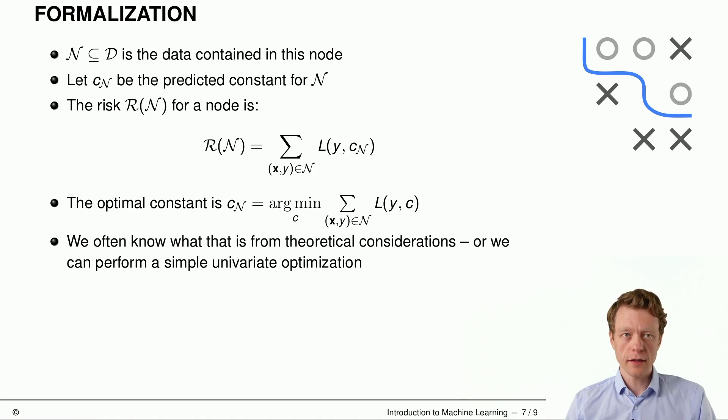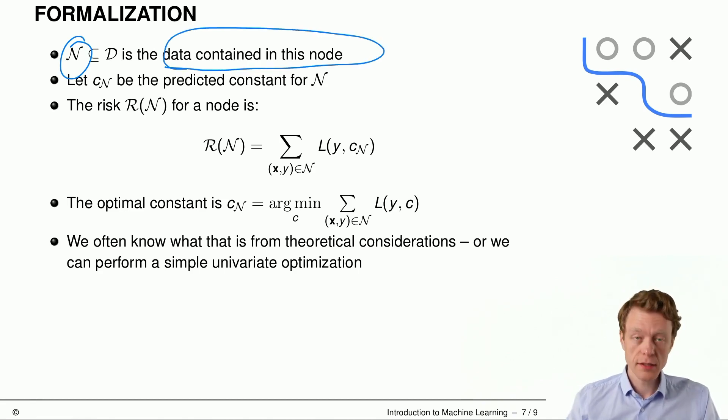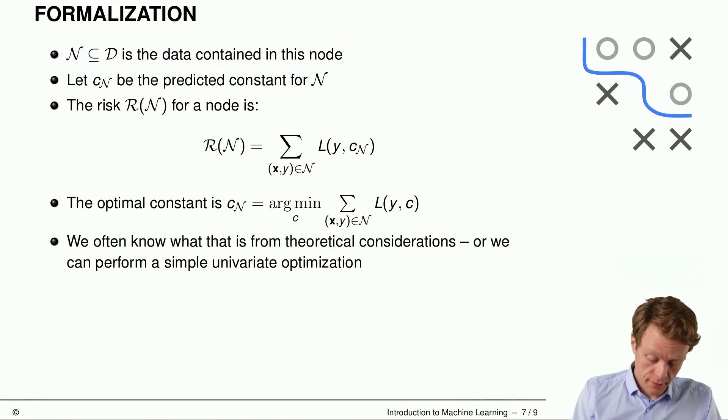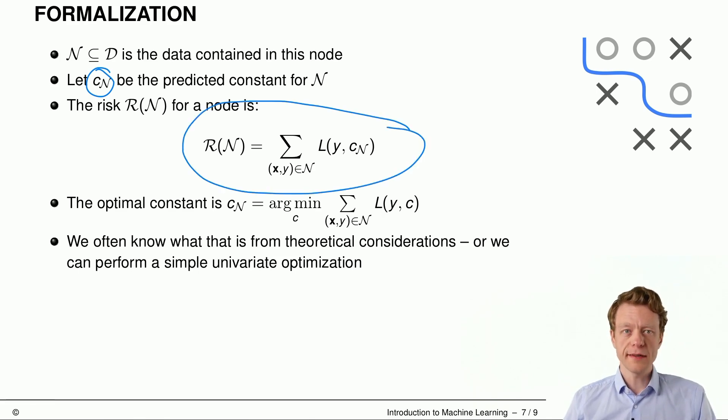Let's formalize this a little bit. N is not only a node, but it's also the data contained in this node. So we have a node n. Let's call the predicted constant in that node c with subscript n. And then the risk for a node is called R of n. It's just a sum over the individual losses. So we sum over all data points in this node. And we sum up the losses of these data points here with respect to this optimal constant prediction cn.